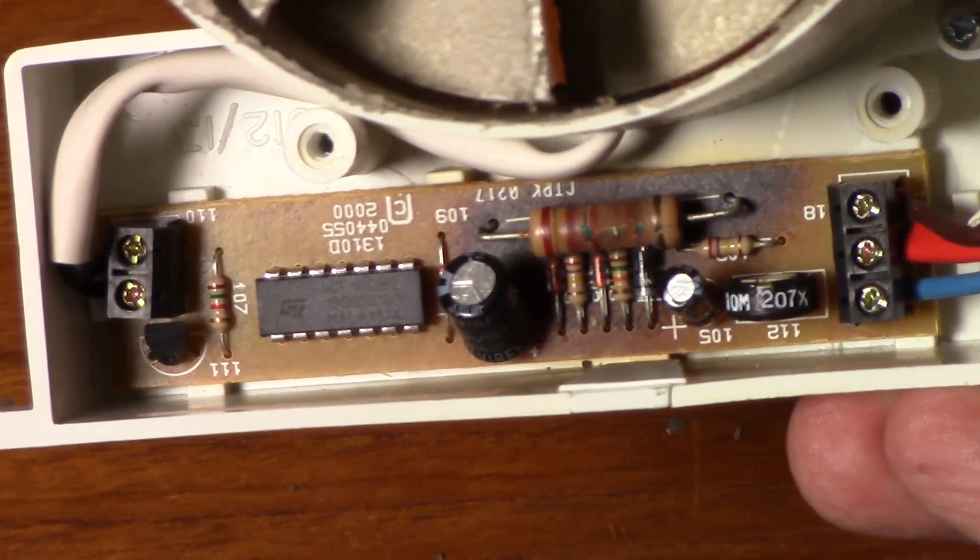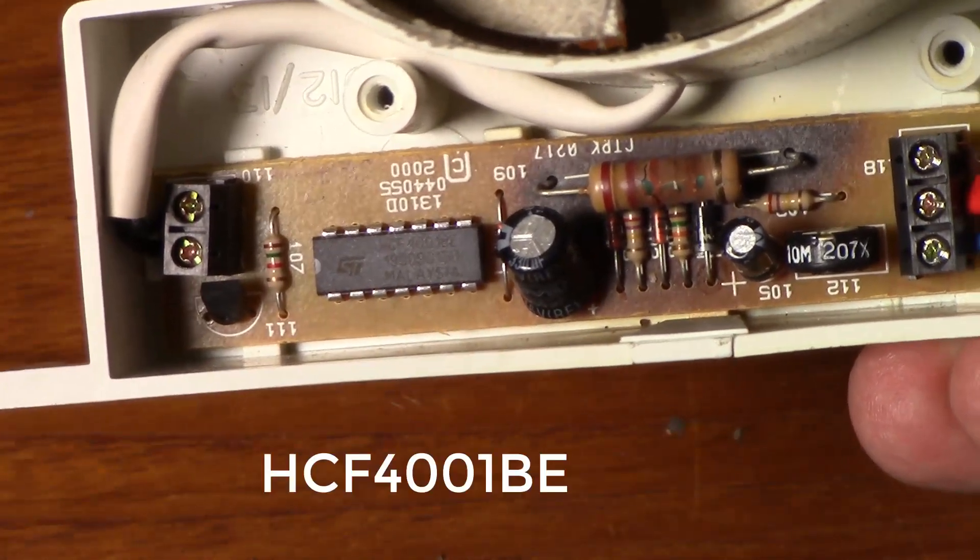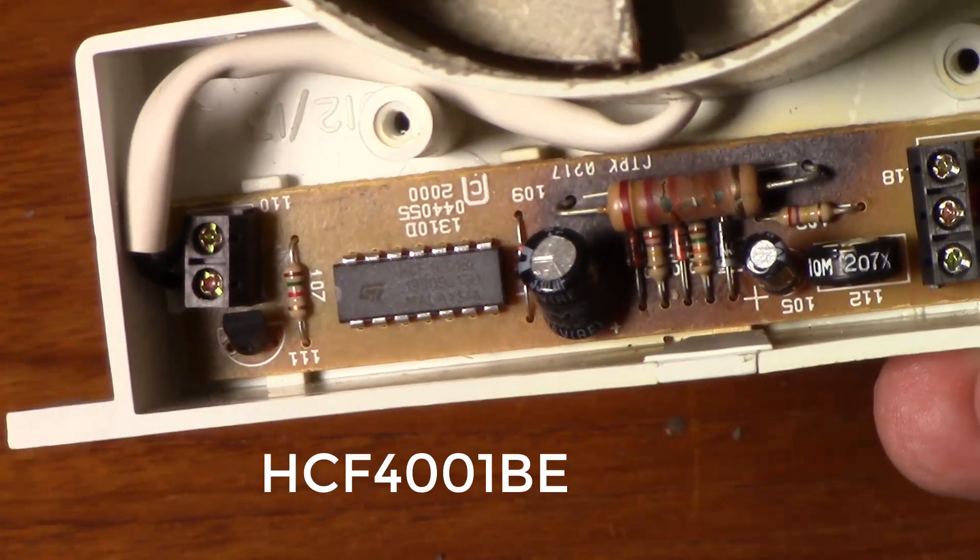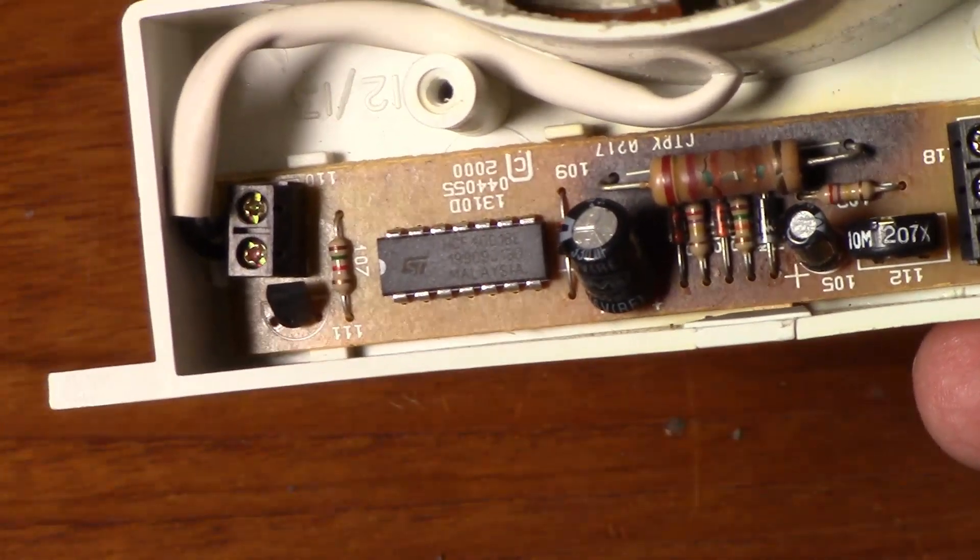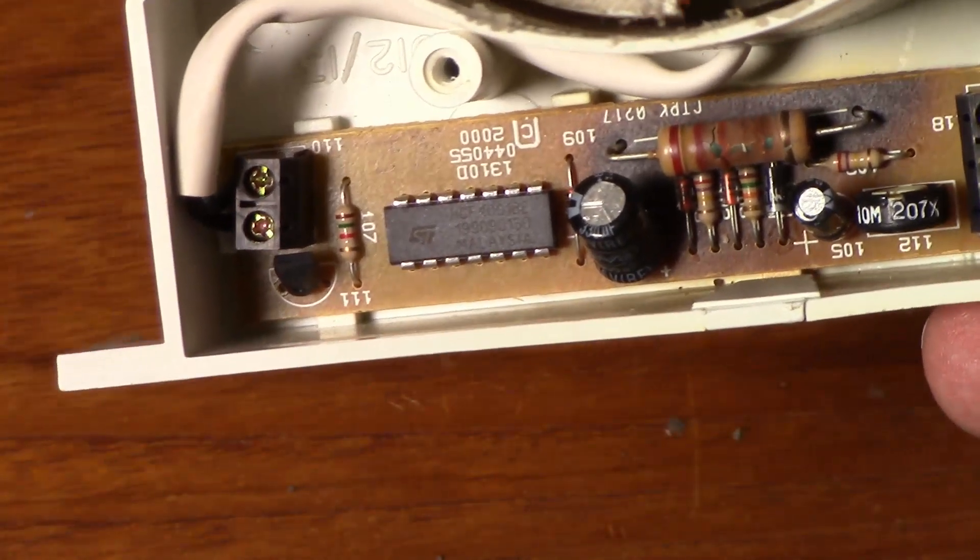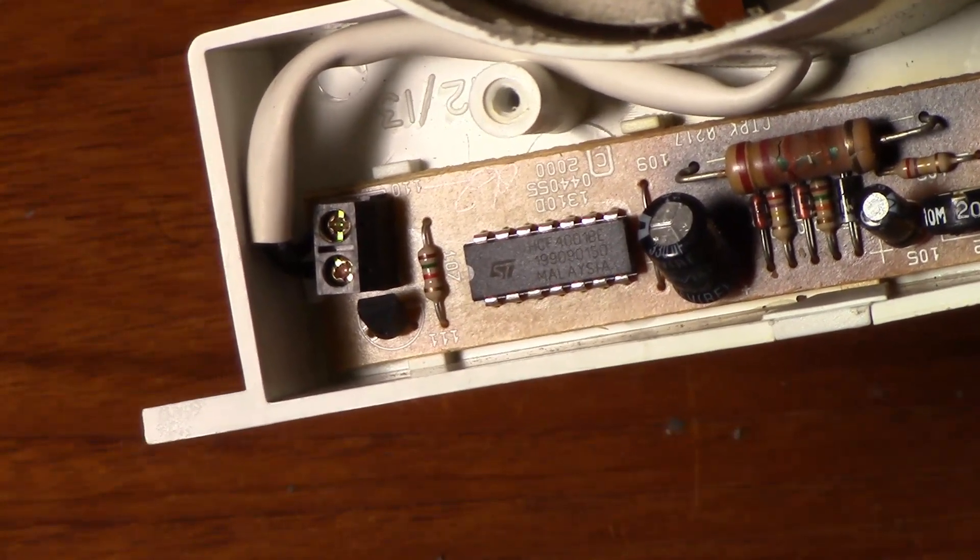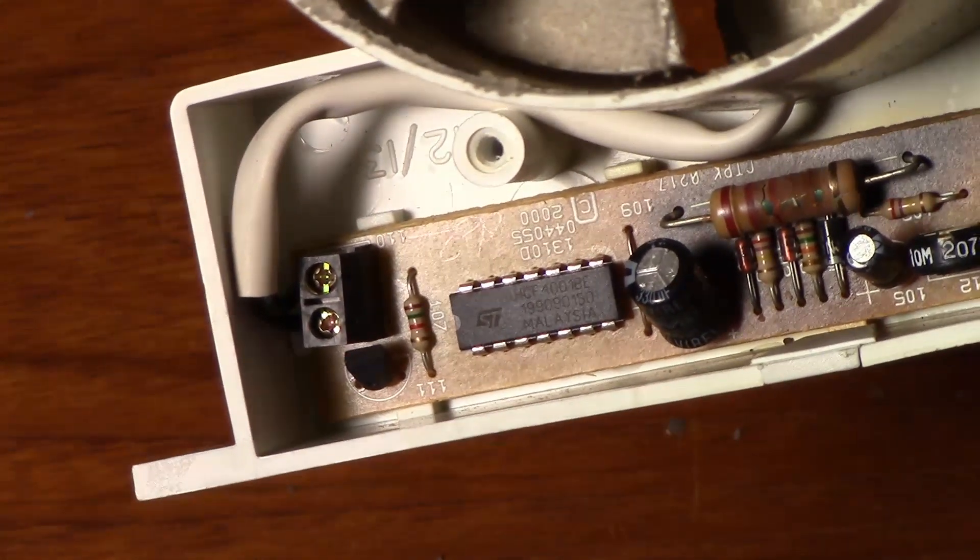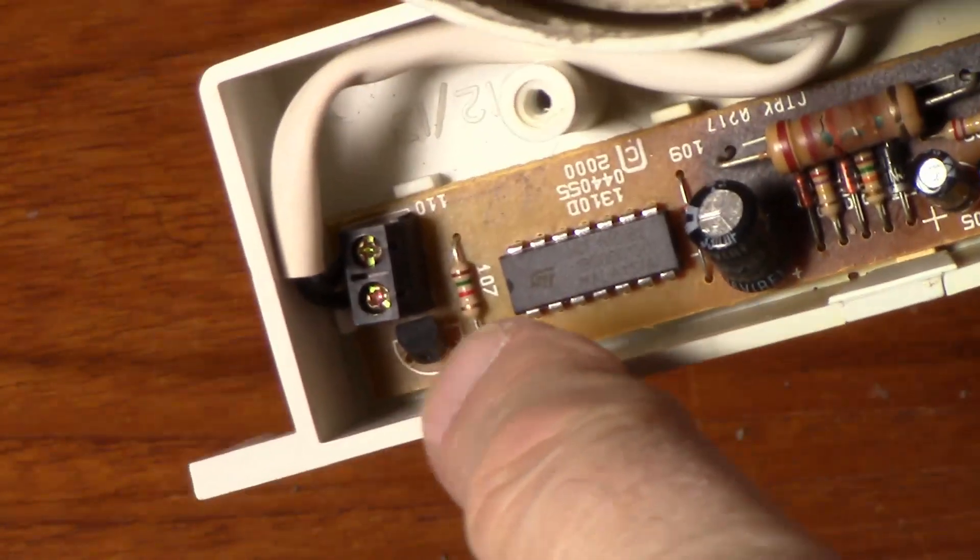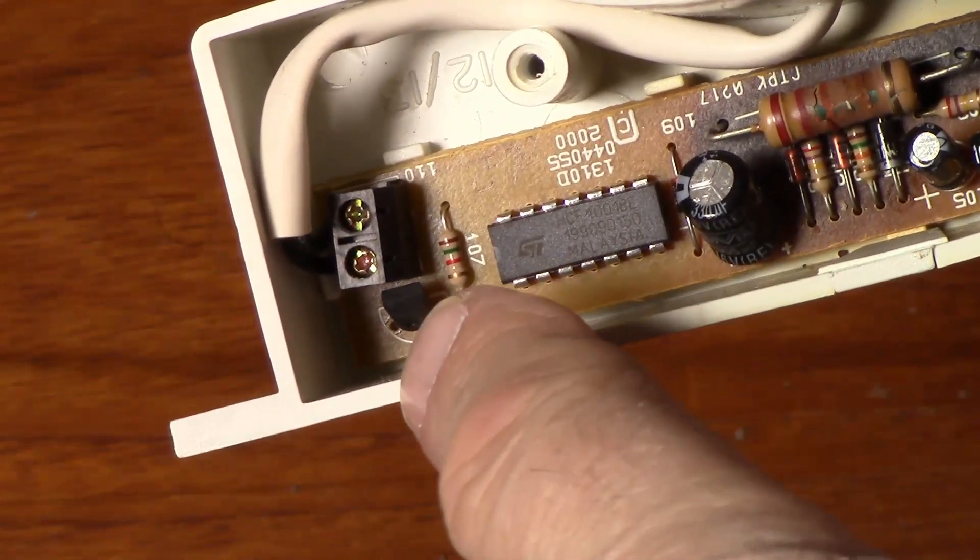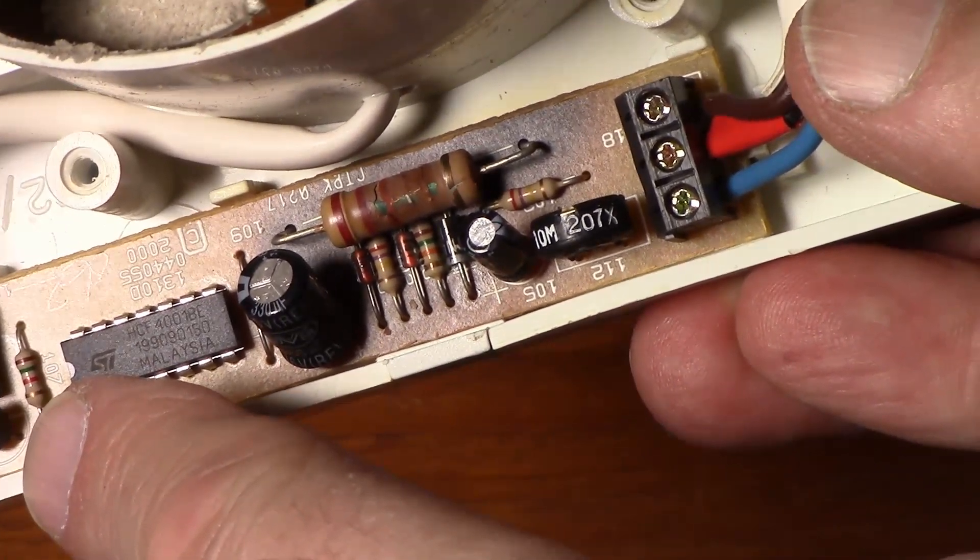The IC is an HCF4001BE which is a CMOS quad two input NOR gate. I'm just wondering what actually switches the fan on and off. Presumably it's this impossibility transistor here? Triac? I don't know. We'll have to take this circuit out and map it out.